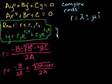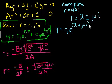The general solution is going to be y = c1e^(first root). Let's make that the plus version. So λ + μi, all of that times x, plus c2 times e to the second root. So that's going to be (λ - μi)x.